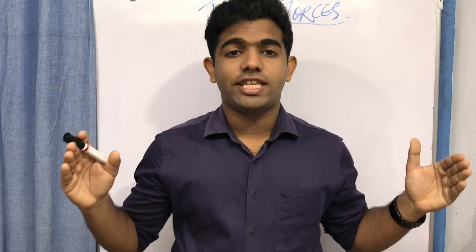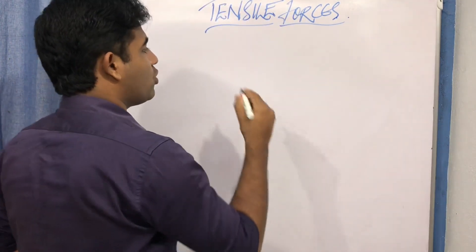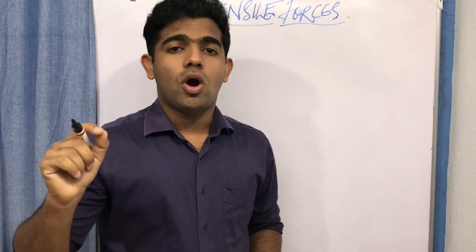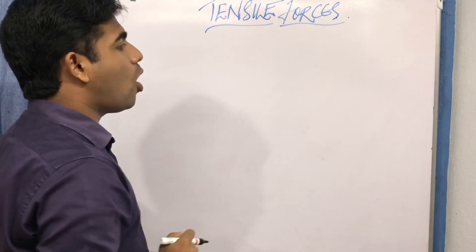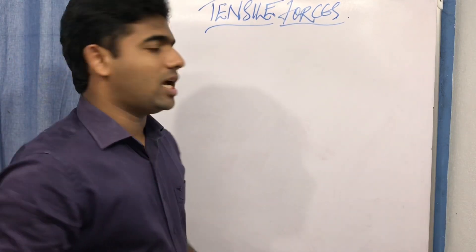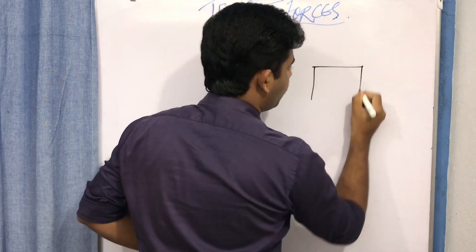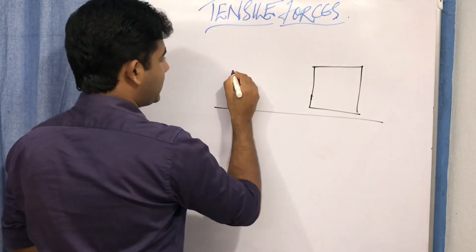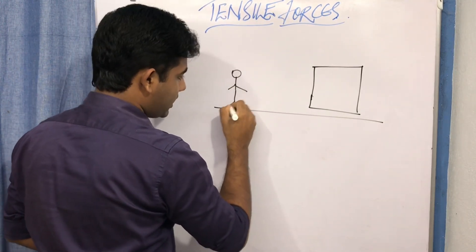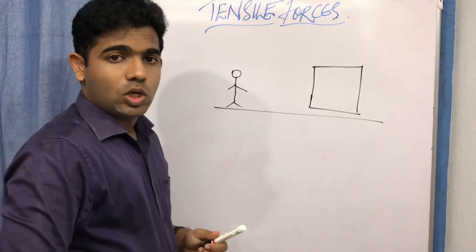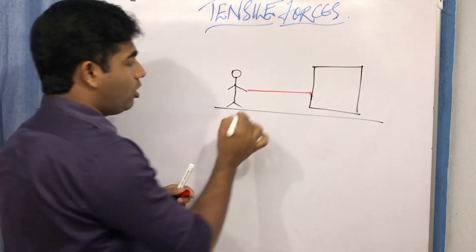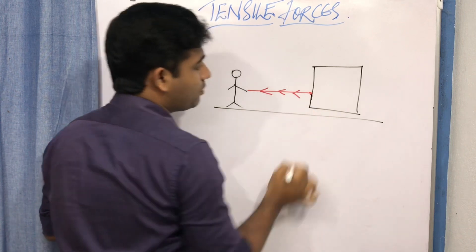What are tensile forces? Tensile forces exist when there is an opposite pull on an object. For example, I have a wooden block or a concrete block on the ground. I am standing over here and I have a rope which I attach to the wooden block and I try to pull the wooden block towards me.